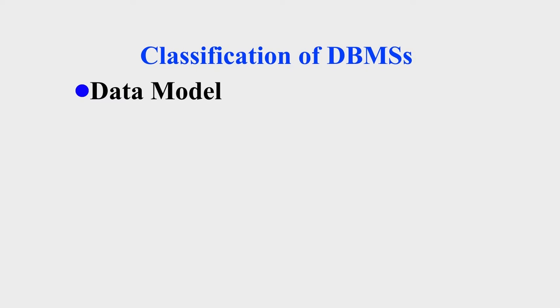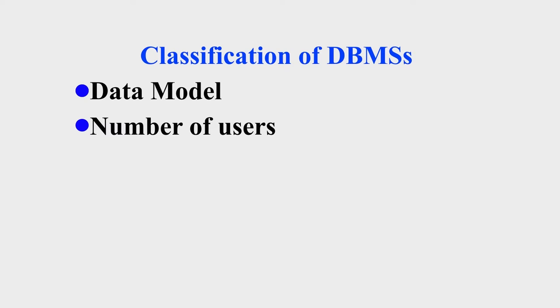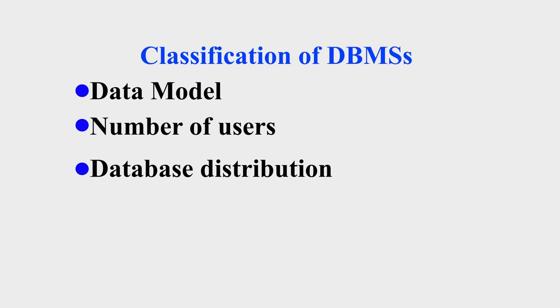Now let us learn how to classify a database management system. The first way is by using a data model — for example, a network database, hierarchical database, or relational database. Relational databases are the most popular ones used today. Another way of classifying a DBMS is by the number of users: a single-user or multiple-user database management system. Another way is by how the database is distributed — either a centralized database situated in one place, or a distributed database.